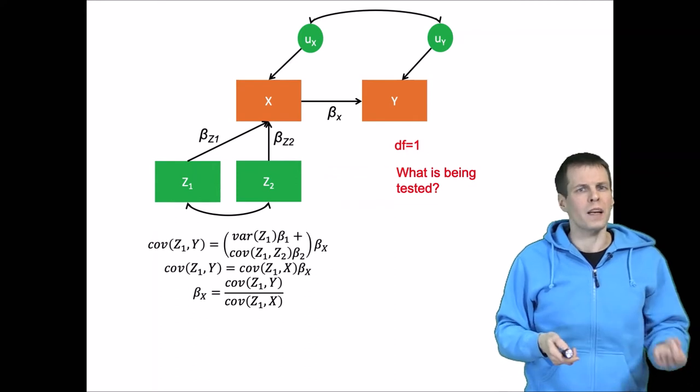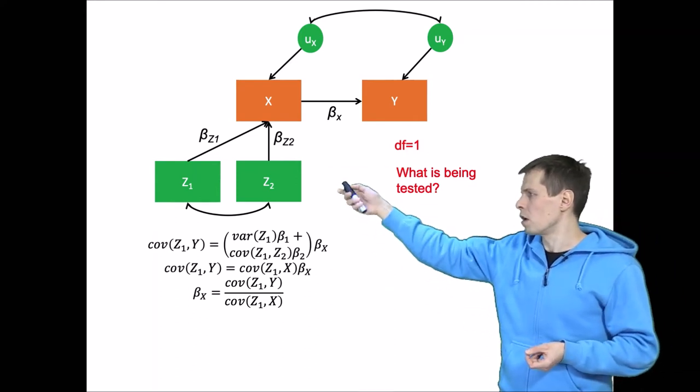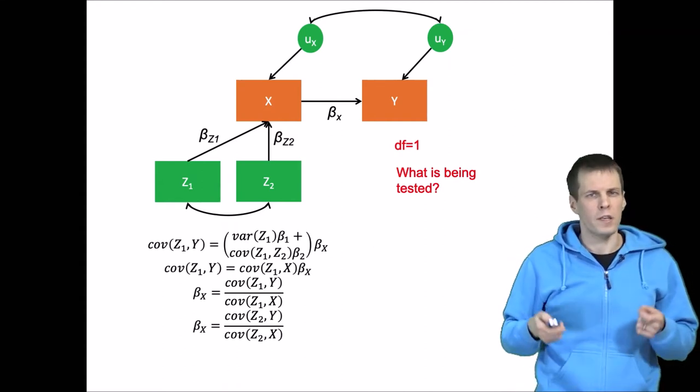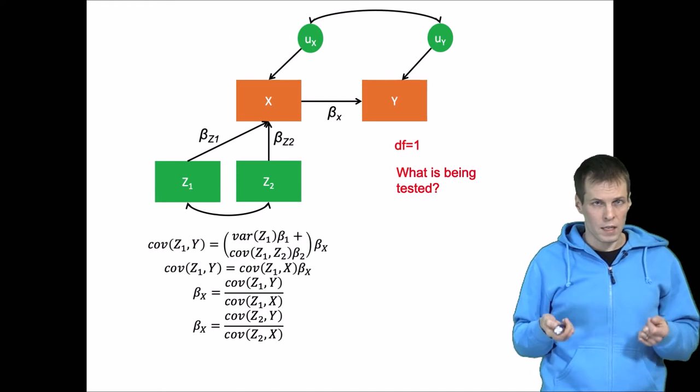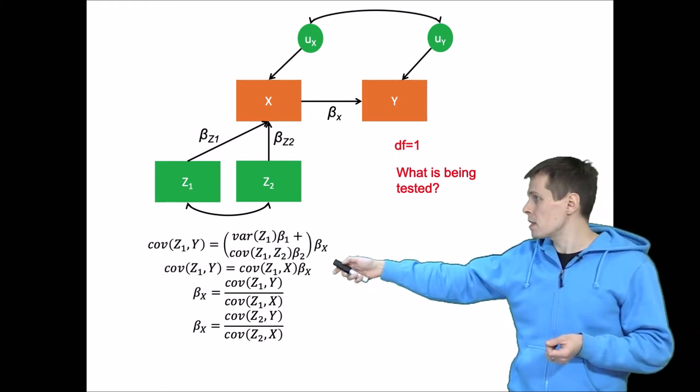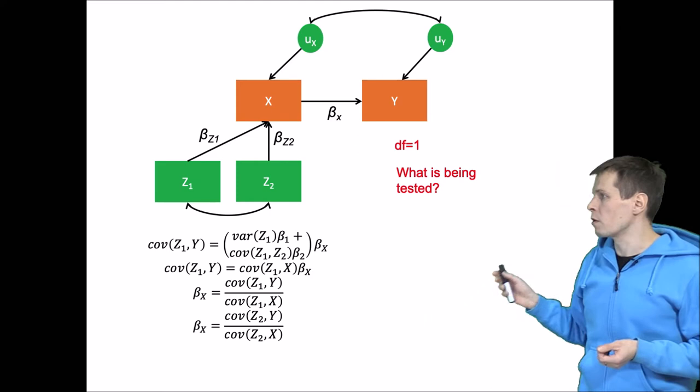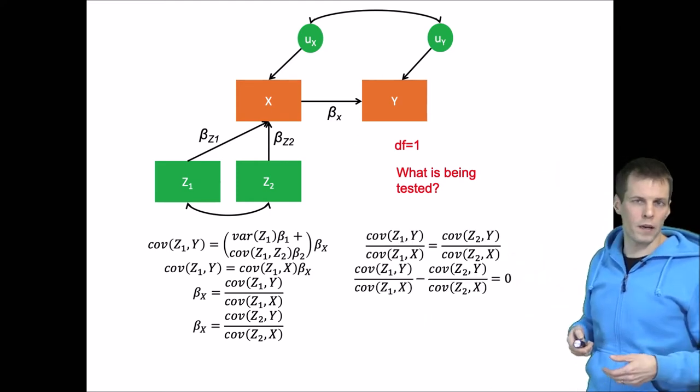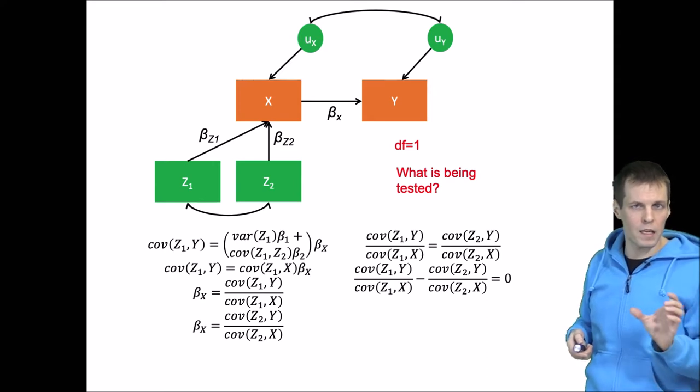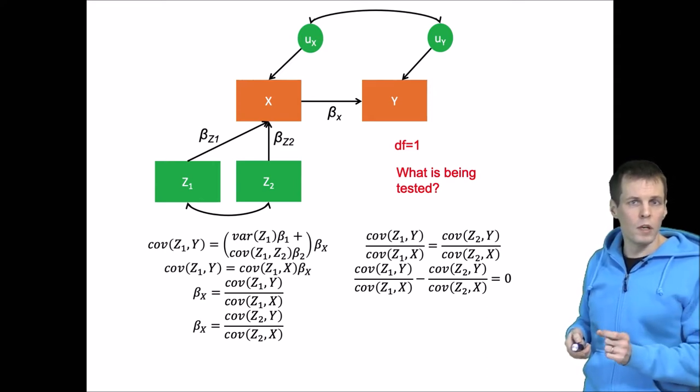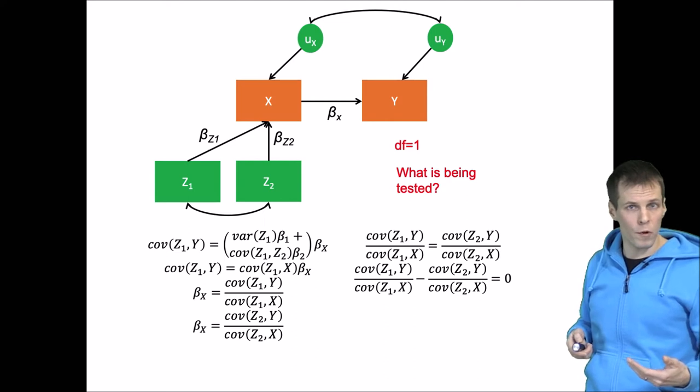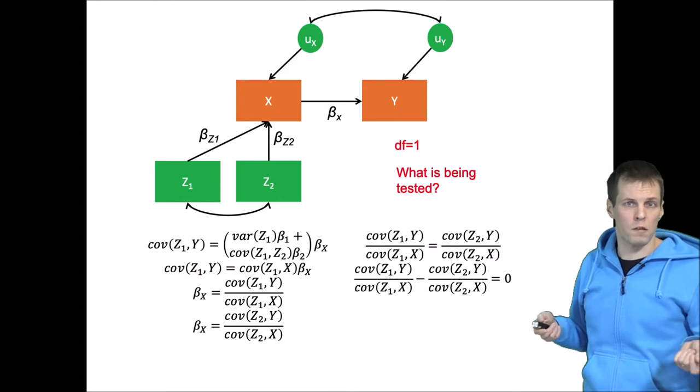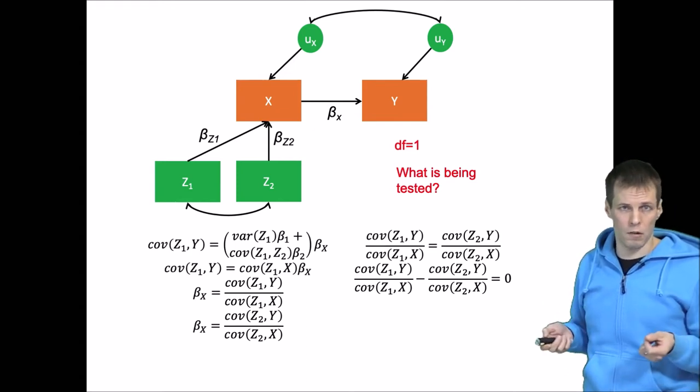We can also solve beta X using Z2. So that gives us another estimate, and our test, the over-identification test, is simply testing if these two are the same. So we write the equation a bit differently like so and we express it that the difference between these two ratios is zero. We actually calculate that ratio from our data. If it's far from zero, then we conclude that this constraint does not hold. So we are rejecting our hypothesis.